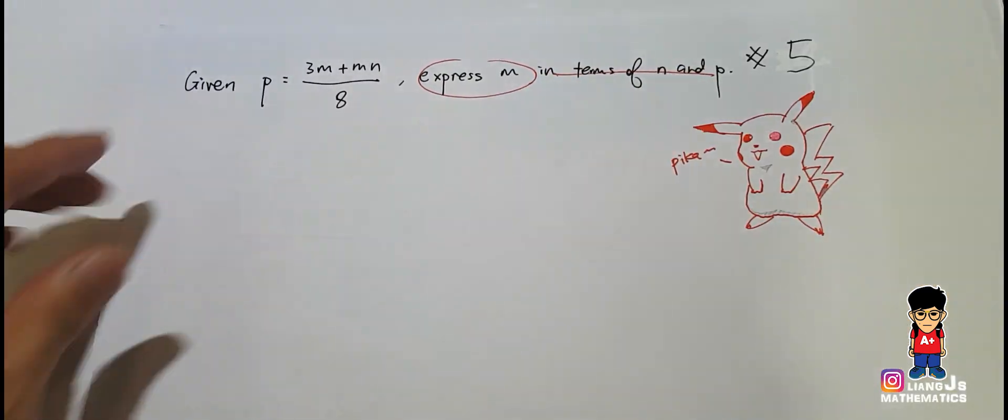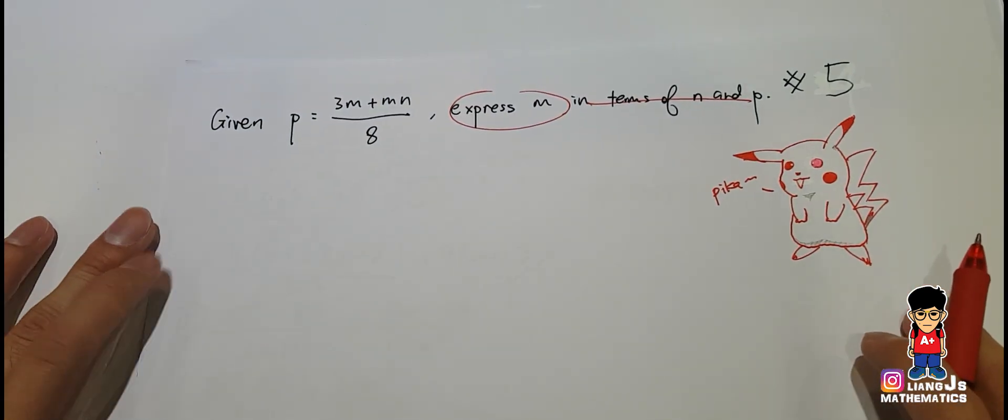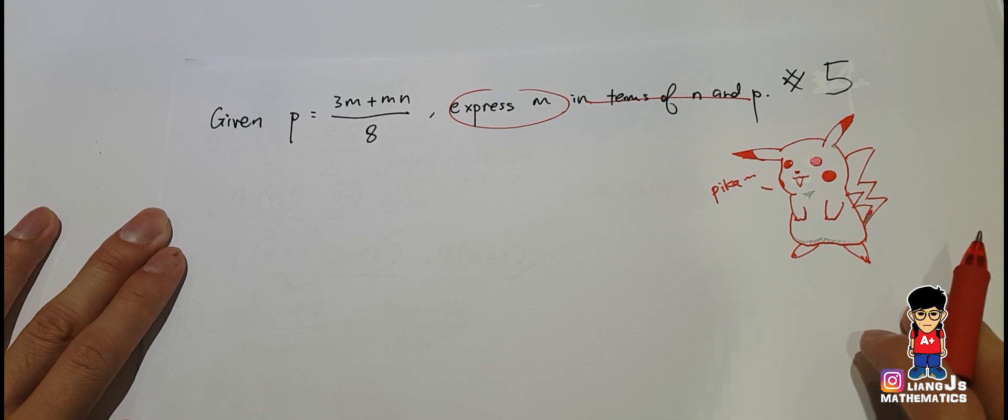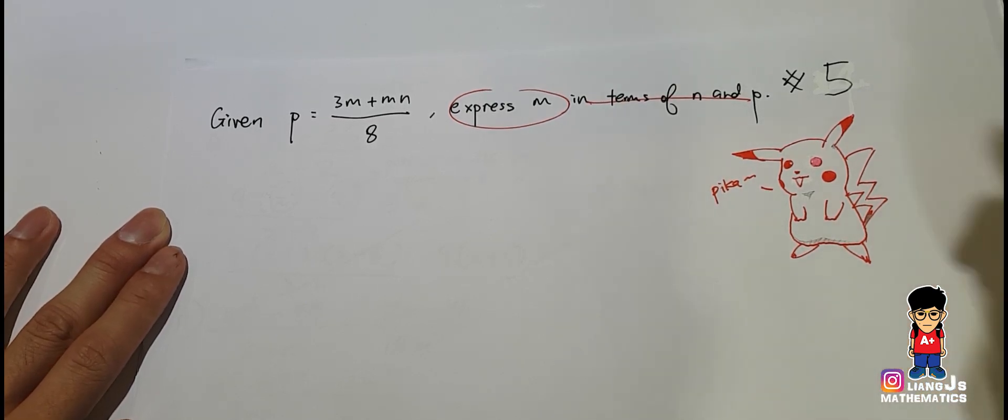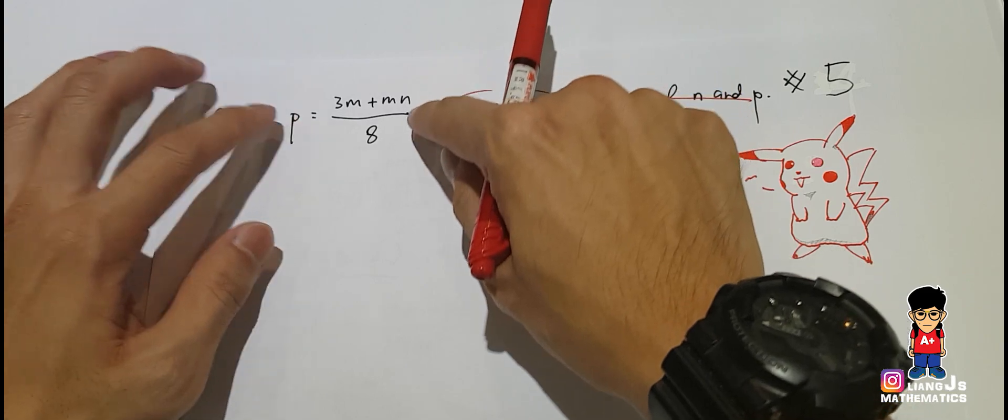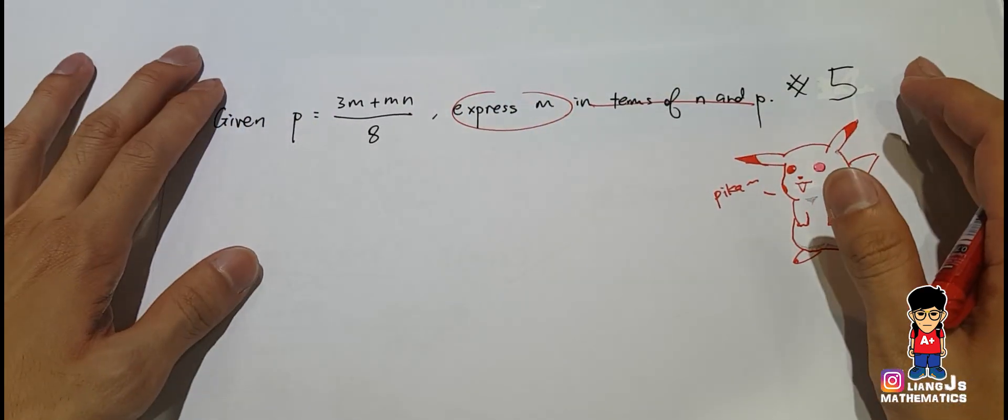Express m means m equals to something. In order to make sure m equals to something, you have to manipulate this equation, and everything is like linear equation related.